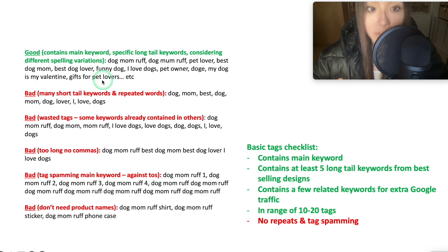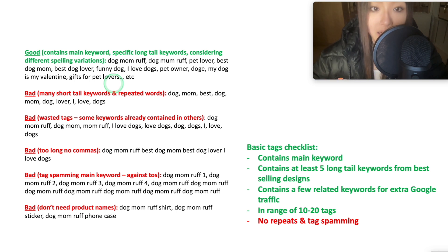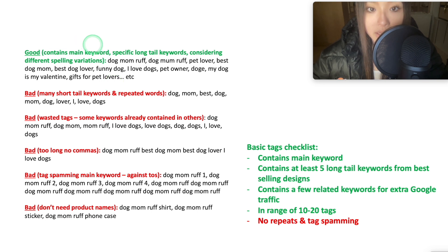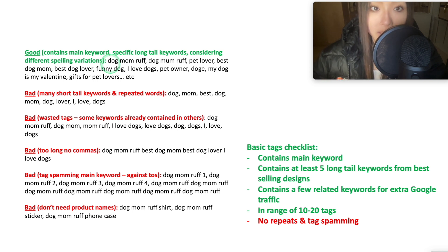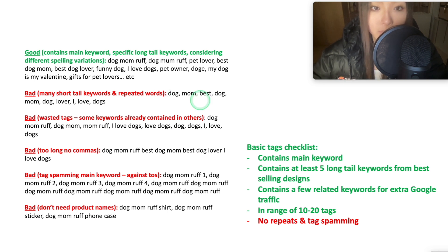For the remaining tags beyond your core 10, fill in words you think people might search on Google — use common sense. If your design is scary, put 'Halloween'; for family designs, put 'Mother's Day,' 'Father's Day,' 'gift for parents.' We're just trying to get as much traffic as possible. Once your design sells for the low-competition main keyword, it gets indexed for broader keywords like 'Halloween' and moves up in rank for those too. Aim for 15 to 20 tags — you can add up to 50, but too many actually decreases your search rank.